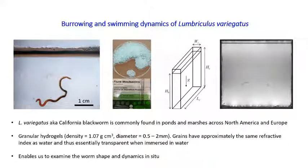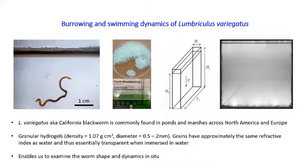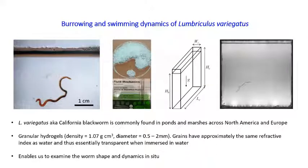We put the worm inside a box using a quasi-two-dimensional system — a Hele-Shaw cell — where one dimension is a bit smaller to constrain the motion to two dimensions, while the worm is free to use whatever stroke it prefers. This allows us to visualize the dynamics more easily than tracking in three dimensions. We have also verified the three-dimensional motion to confirm that what we discuss here is consistent with a full 3D container.